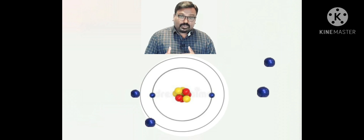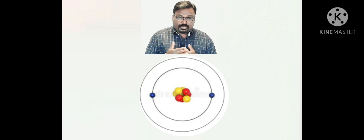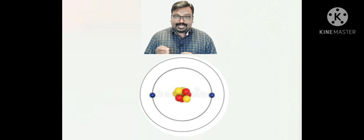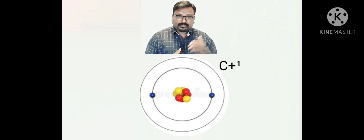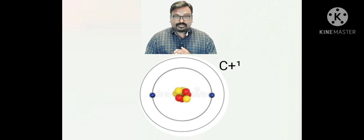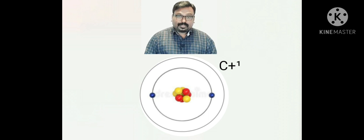Now let us consider the second condition — whether carbon can lose four electrons. We know that when an element loses electrons there will be an increase in positive charge, and the element becomes a cation. Here carbon would have to lose four electrons, and therefore it should become a positively charged particle, or in other terms, it should become a cation.